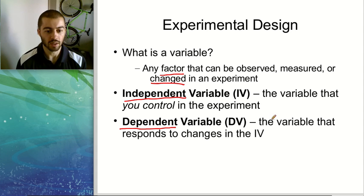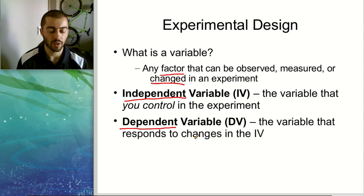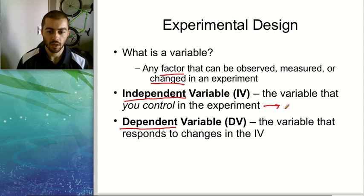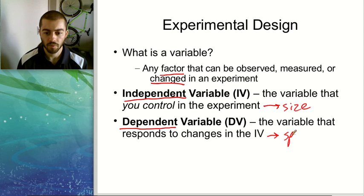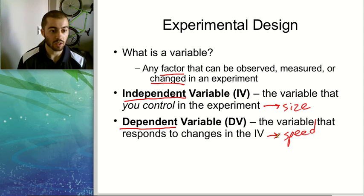The dependent variable is the variable that responds to those changes that you made in the independent variable. For example, let's say we're trying to do an experiment to see how the size of a bicycle affects how fast you can go on that bicycle. In this case, the independent variable would be the size, because we're controlling that — we're going to test bikes that are different sizes and see how fast they can go. The dependent variable would then be the speed, because we're controlling the size and seeing how the speed changes when we change the size of the bike.